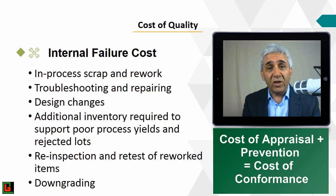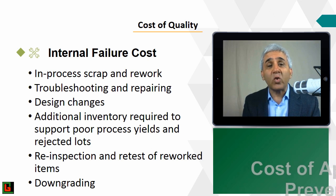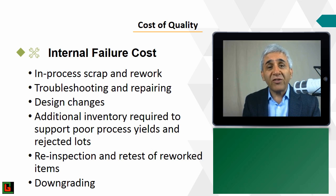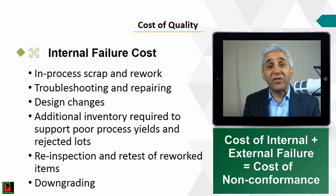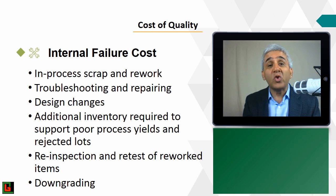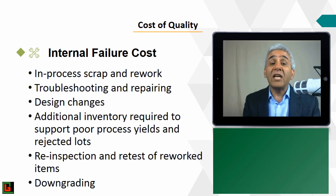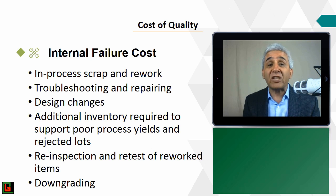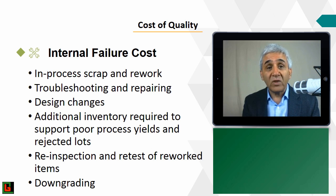The third category, internal failure cost, covers any cost from failures within your own facility before the product reaches the customer. Examples include in-process scrap and rework — the money spent on rework is an internal failure cost — as well as troubleshooting and repair.